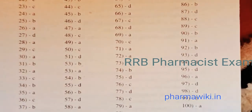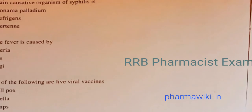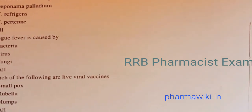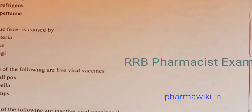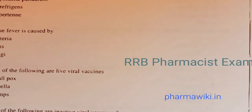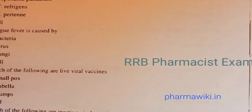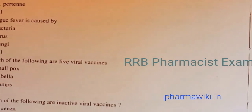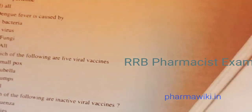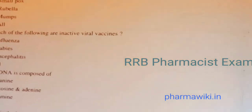Question 87: The main causative organism of syphilis is Treponema pallidum. Question 88: Dengue fever is caused by a virus. Question 89: Which of the following are live viral vaccines? Smallpox, rubella, and mumps are all live viral vaccines. Question 90: Which of the following are inactivated viral vaccines? Influenza, rabies, and encephalitis vaccines are all inactivated viral vaccines.